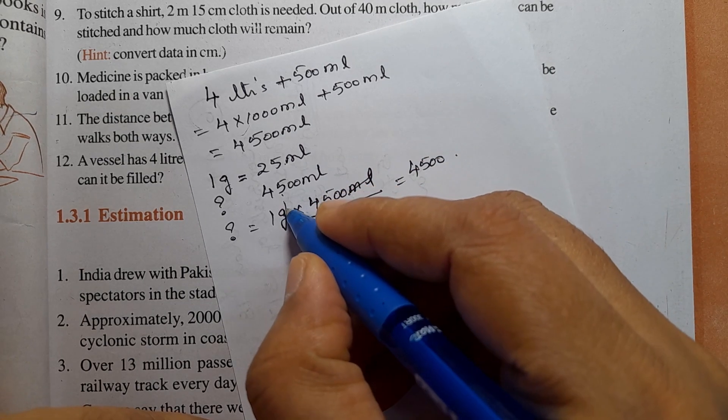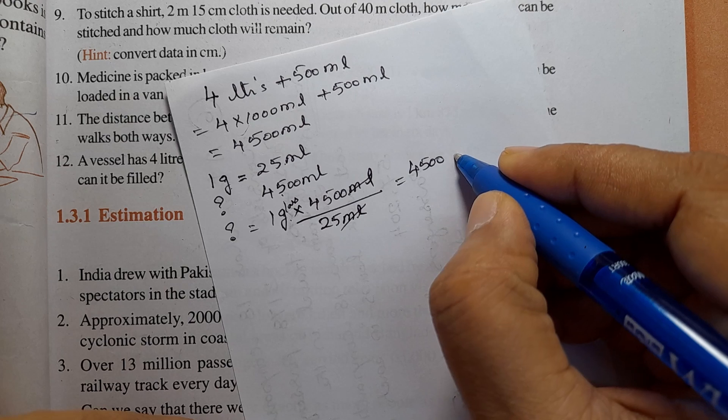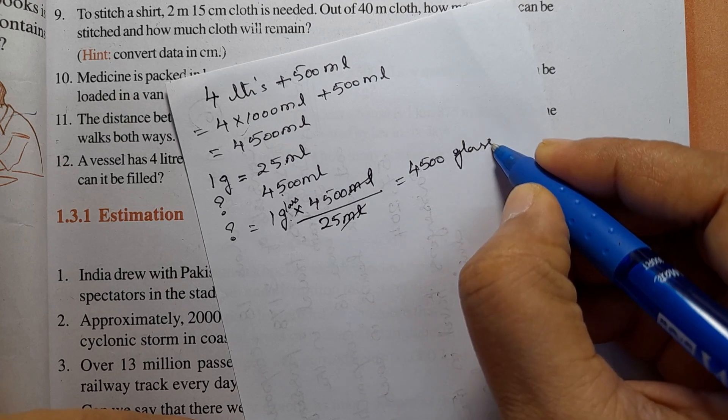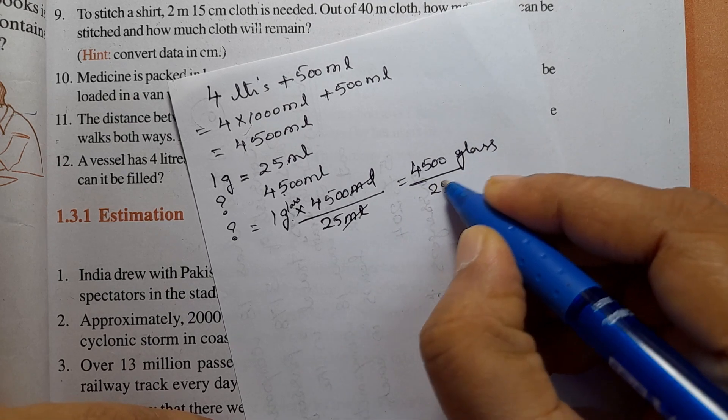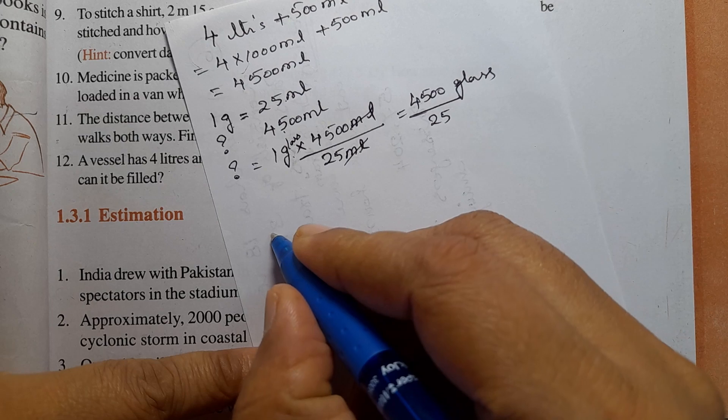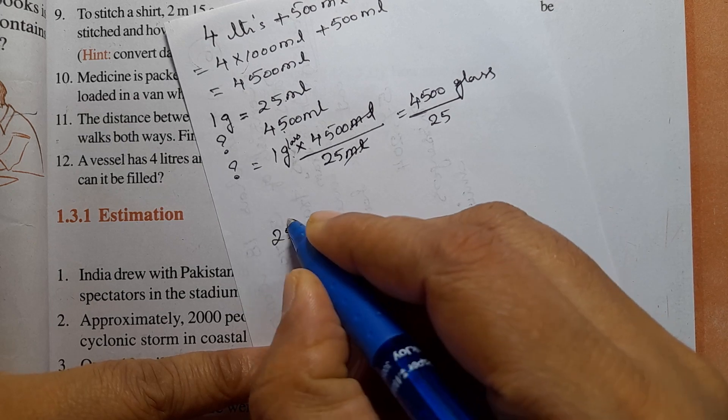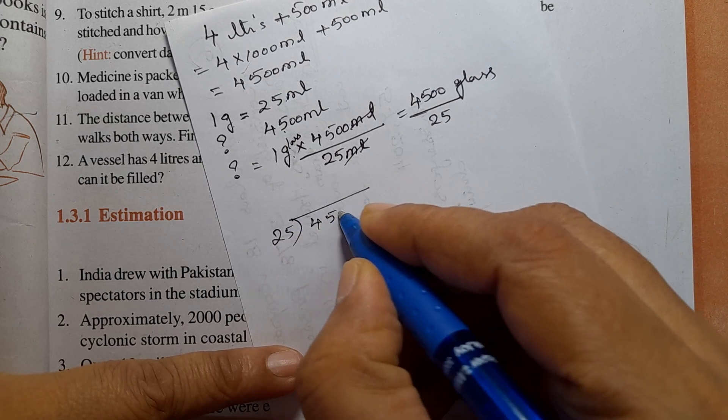Now we calculate the number of glasses: 4500 ml divided by 25 ml per glass.